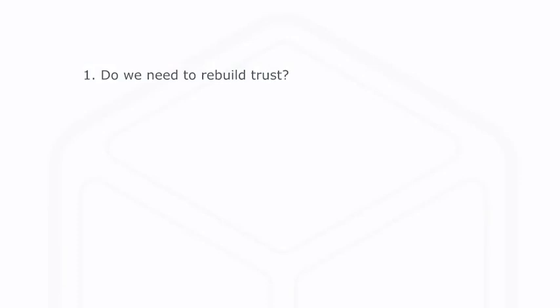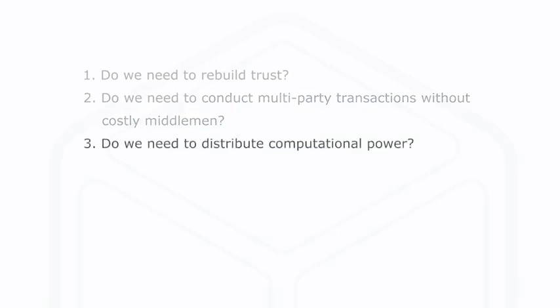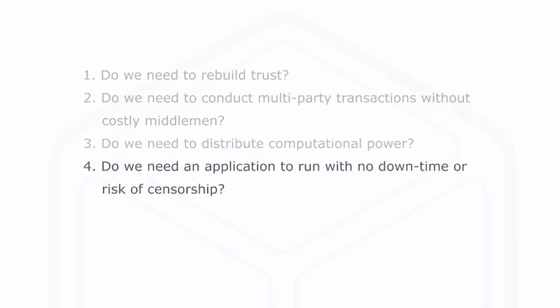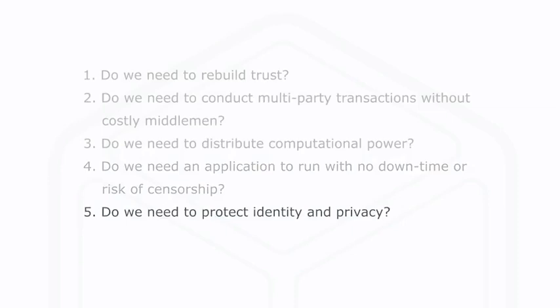Consider five questions in particular. Number one: do we need to rebuild trust? Number two: do we need to conduct multi-party transactions without a costly middleman? Number three: do we have a reason to distribute computational power? Number four: do we need an application to run with no downtime or risk of censorship? And number five: do we need to protect identity and privacy? If we answer yes to all five questions, then blockchain is the only solution. By the end of this week, you'll be able to tell whether problems are well-suited or maybe not well-suited to blockchain-based solutions. Up next, you'll use a decision matrix to select the most promising of your ideas for your course project.